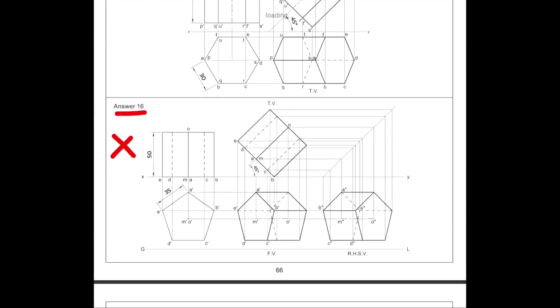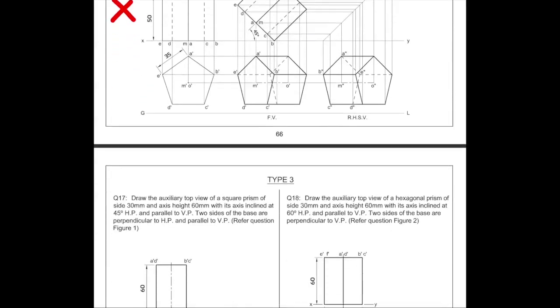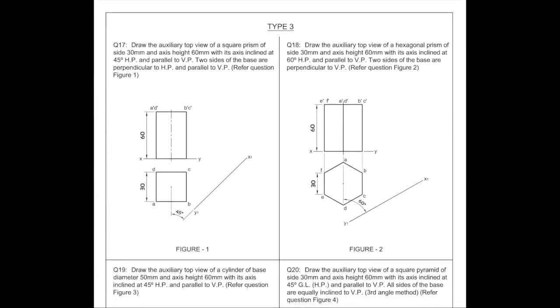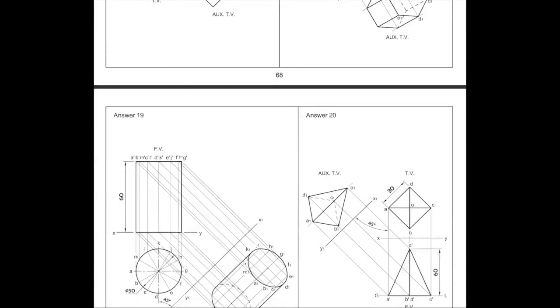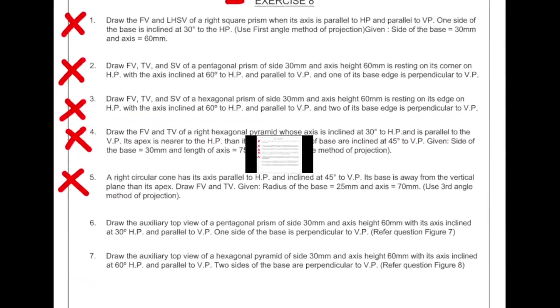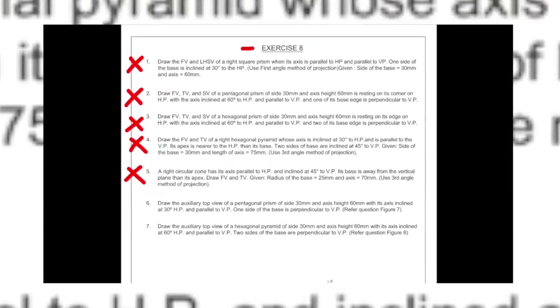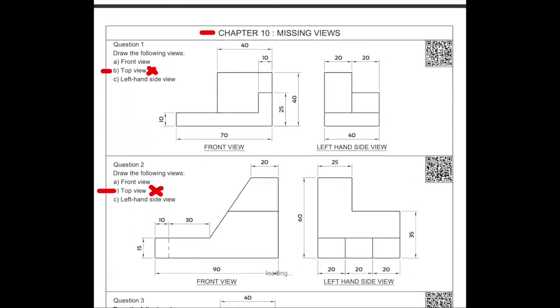Only Type 1 and Type 3 remain, and in Type 1 also one sum is not there. Remember, Type 2 is not there at all — inclined solid is not there. We have Type 3 where we have plain auxiliary; please study this. In exercises 1, 2, 3, 4, and 5, these five sums are not there, which belong to Type 1 and Type 2.